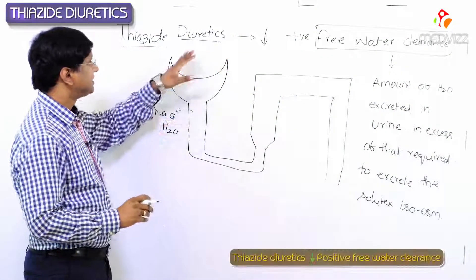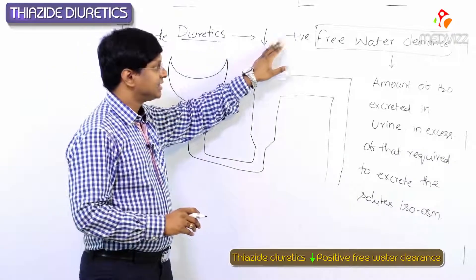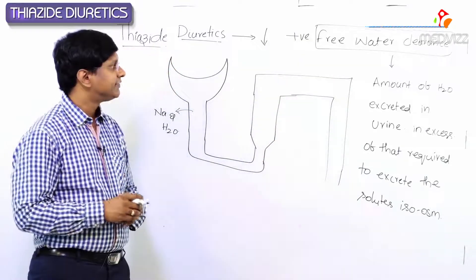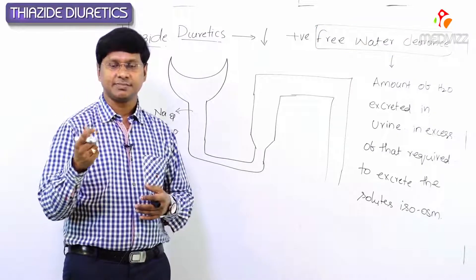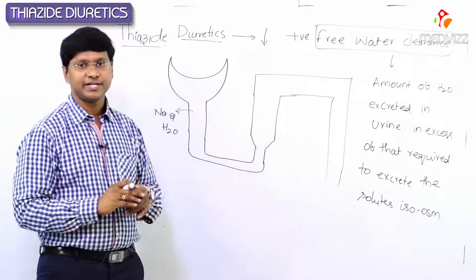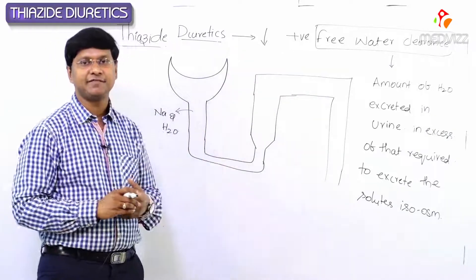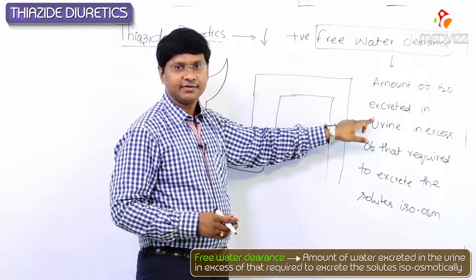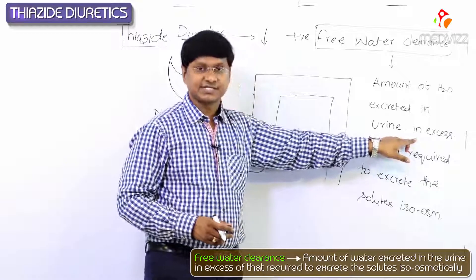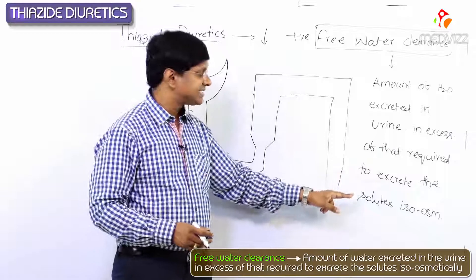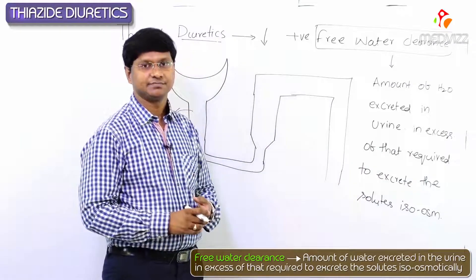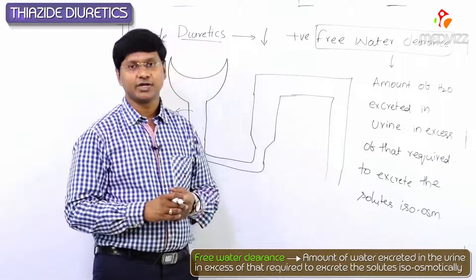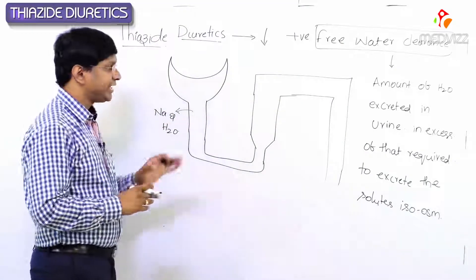We have discussed that thiazide diuretics will decrease the positive free water clearance. Let me explain the concept of free water clearance. The free water clearance is the amount of water which is excreted in the urine in excess of that required to excrete the solute iso-osmotically. The excess amount of water being excreted in the urine is nothing but the free water clearance.